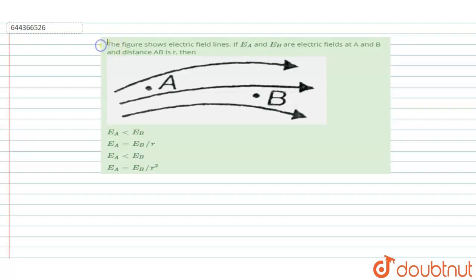Hello, welcome to Doubtnut. In this question, the figure shows electric field lines. If EA and EB are the electric fields at point A and B and the distance between AB is R, then what is the relation between EA and EB?